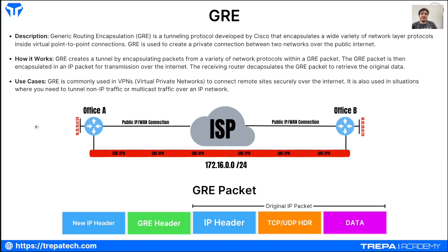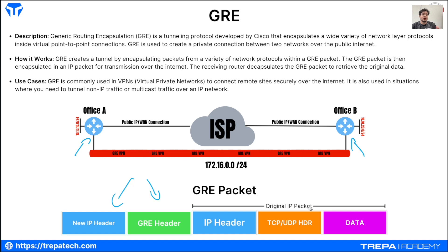Now we're going to get into VPN technologies. GRE, the Generic Routing Encapsulation, is a tunneling protocol developed by Cisco that masks your IP header and allows you to create direct tunnel connections between devices. GRE adds an additional GRE header and a new IP header, but it provides no confidentiality or encryption at all. It allows offices — say Phoenix and New York — to route traffic through that tunnel as if they're directly connected. It's a VPN technology that just provides absolutely no security.